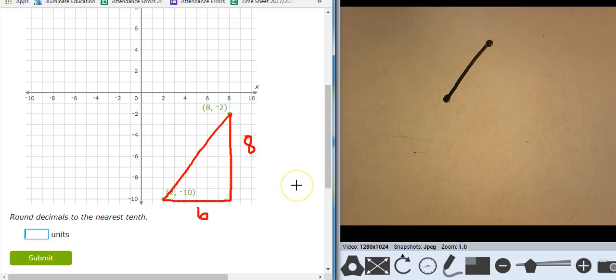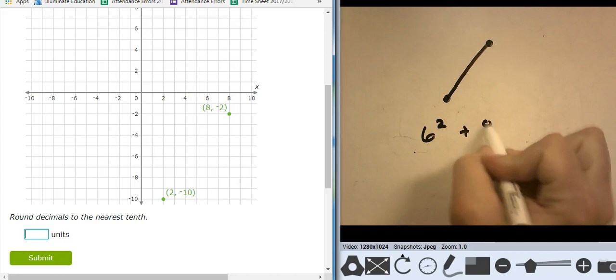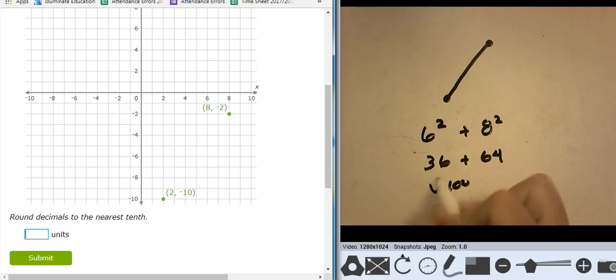And now I'm just going to use the Pythagorean theorem. So I have 6 squared. Okay, I understand, 6 squared. I have to undo this. So it's 6 squared plus 8 squared. So this is 36 plus 64. That's 100. Square root of 100 is 10. So the distance between those points is 10 units.